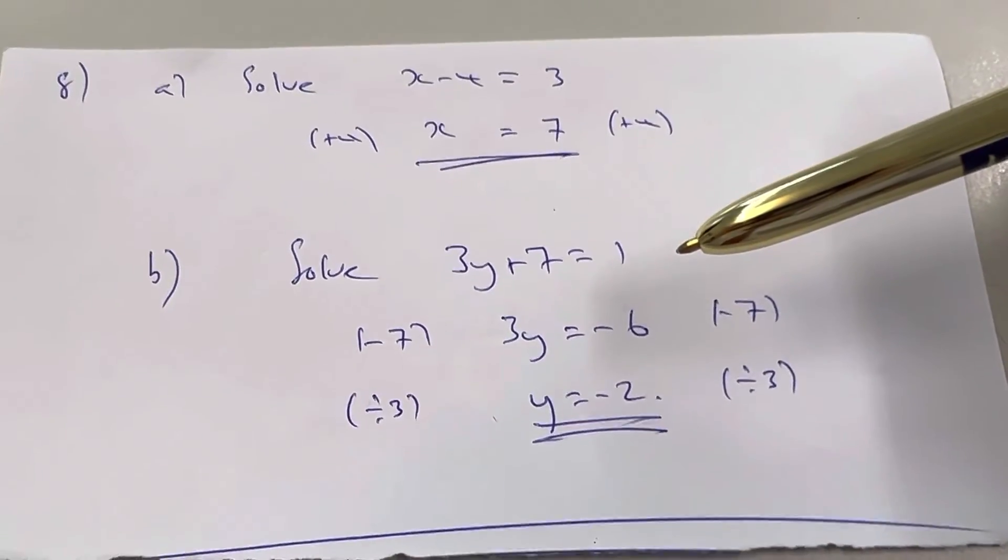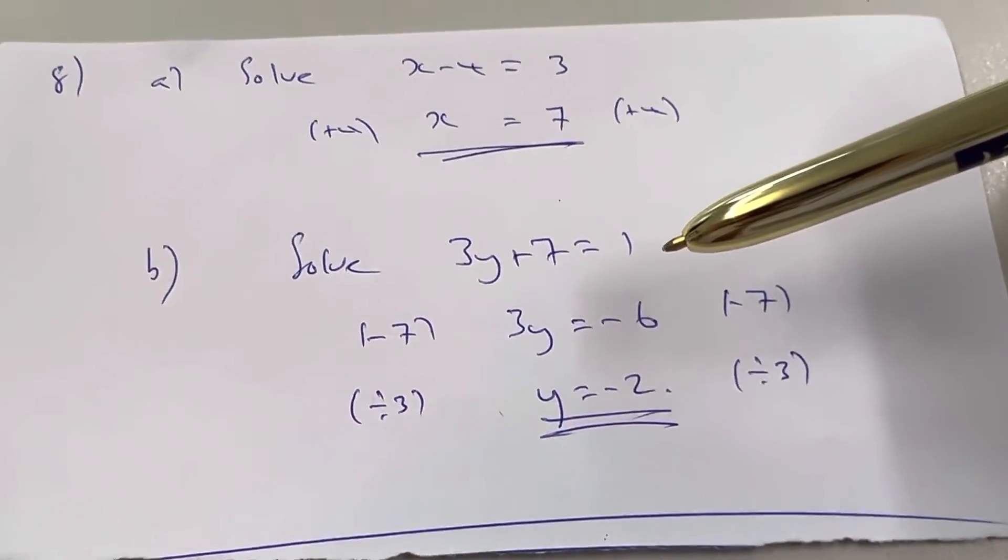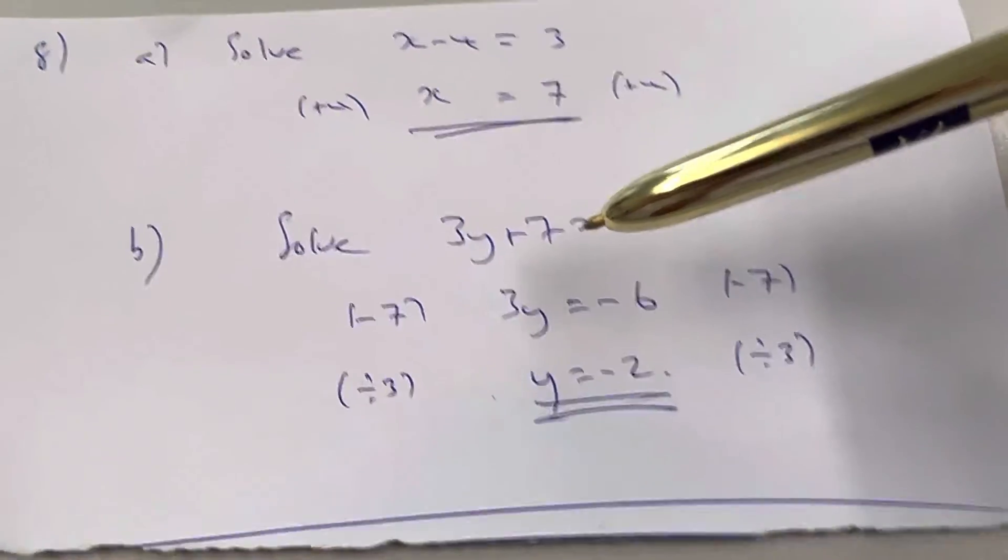Part B, 3y plus 7 equals 1. Two things to undo to get the y. Firstly, make sure you do them in the right order.